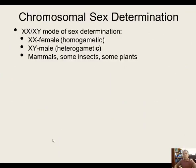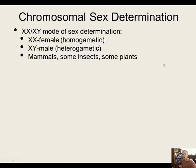In humans and other placental mammals, the sex determination system is XX/XY. XX female, XY male. Because XX females have a homologous set of sex chromosomes, we call these homogametic. XY males are non-homologous, so we call males heterogametic. This system is found in mammals, but also some insects and some plants. Sex determination has definitely evolved several times throughout evolution.